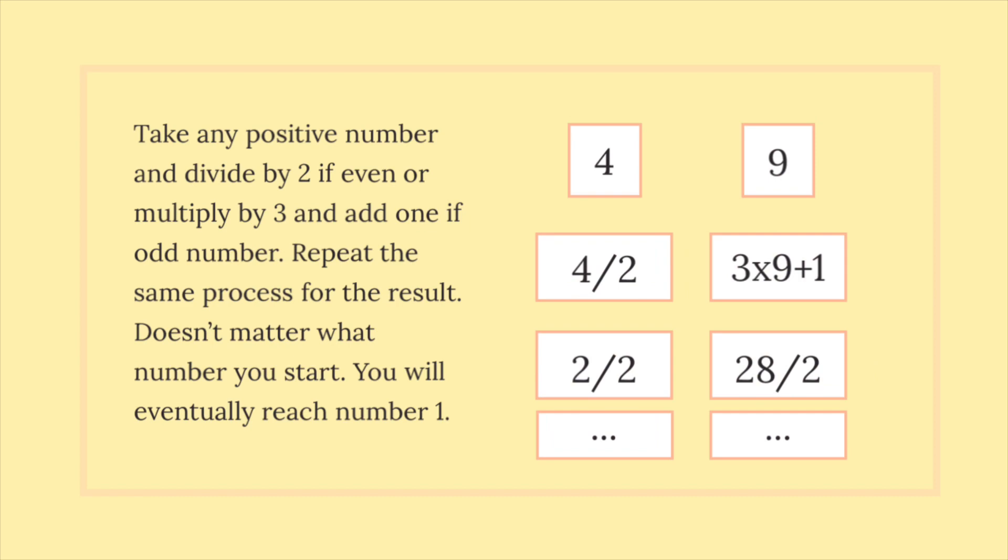Take any positive number and divide by 2 if even or multiply by 3 and add 1 if odd number. Repeat the same process for the result. Doesn't matter what number you start, you will eventually reach number 1.